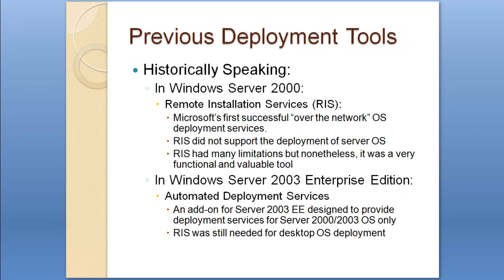Historically, starting from earlier Windows Server versions, Remote Installation Services (RIS) was first introduced by Microsoft — it was the first successful over-the-network OS deployment service Microsoft developed. RIS did not support the deployment of server operating systems and had many limitations, but it was functional and a valuable tool. Then in Windows Server 2003 Enterprise Edition, Microsoft introduced Automated Deployment Services as an add-on, designed to provide deployment services for Windows Server 2000 and 2003 only — meaning RIS was still needed for desktop OS deployment.